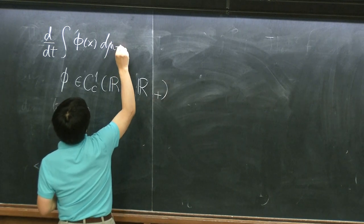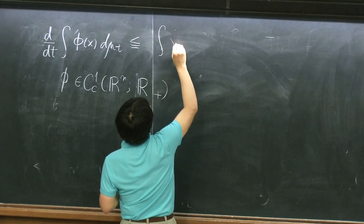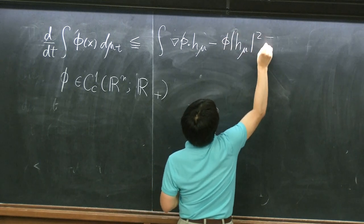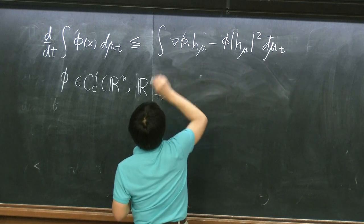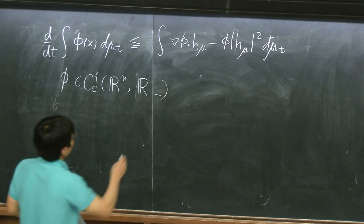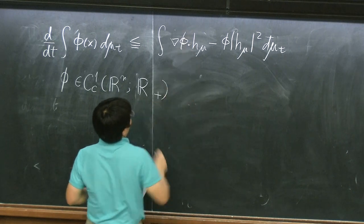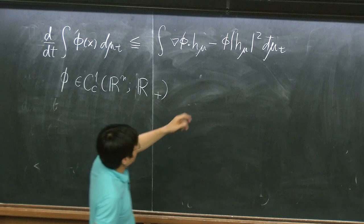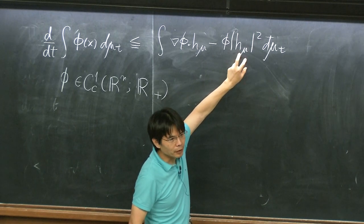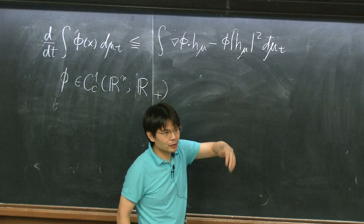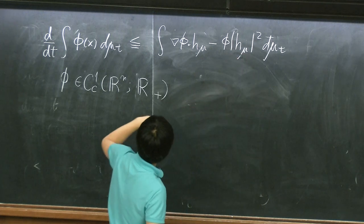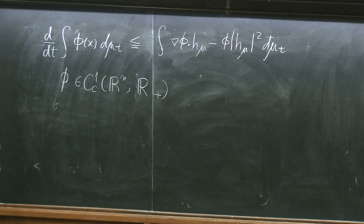The inequality is: the left side is less than or equal to the integral of phi dot H mu minus phi times H mu squared d mu_T. That was the inequality. A priori, the bound we have is that the mean curvature is bounded in spacetime in L2. This mean curvature term is bounded in L2 in spacetime integration. That's about it — we don't have much.